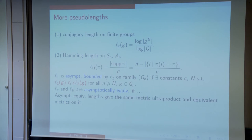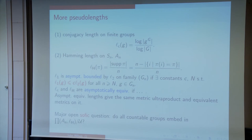So here we have two metrics and maybe some sort of conflict. What's the relationship between them in the case of alternating groups? Well, there isn't any conflict and that's because they're both asymptotically equivalent. You say that L1 is asymptotically bounded by L2: these are both pseudo-length functions. L1 is asymptotically bounded by L2 on some family if there are constants C and N such that L1(G) is less than or equal to C·L2(G) for all sufficiently large N and for all elements G. And then the definition of asymptotic equivalents is clear. It's probably also fairly clear, it's very easy to prove, that asymptotically equivalent lengths give rise to the same metric ultraproduct.